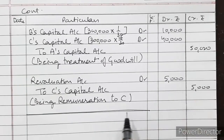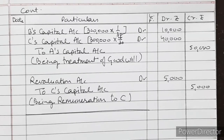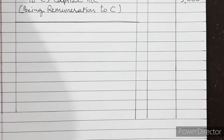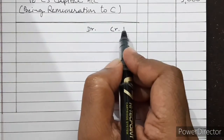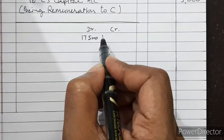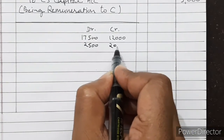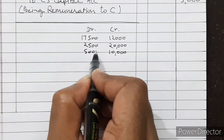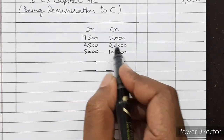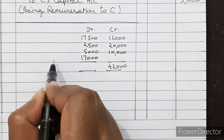Now we calculate profit or loss from revaluation. Revaluation Account debit side: Rs. 17,500 (land & building) + Rs. 2,500 (provision) + Rs. 5,000 (remuneration) = Rs. 25,000. Credit side: Rs. 12,000 (machine) + Rs. 20,000 (motorcycle) + Rs. 10,000 (creditors) = Rs. 42,000. Difference is Rs. 42,000 − Rs. 25,000 = Rs. 17,000 profit on revaluation.